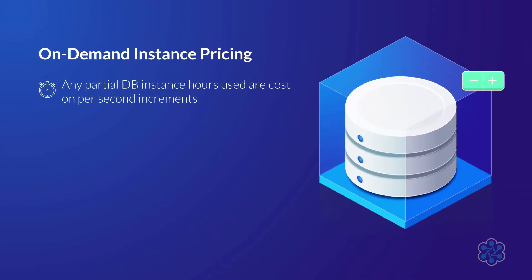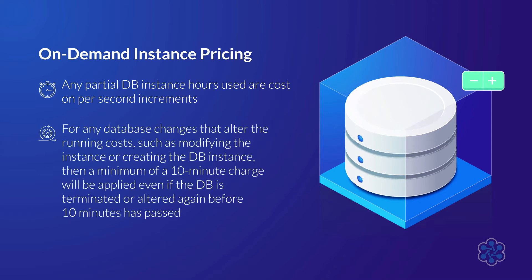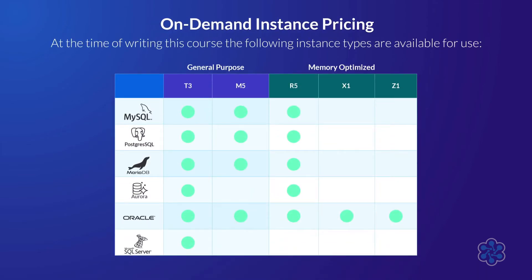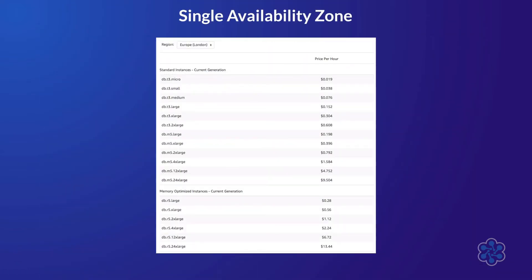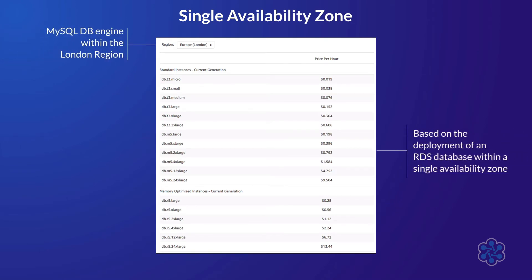Any partial database instance hours used are billed on per second increments. For any database changes that alter the running costs, such as modifying the instance or creating the database instance, a minimum of a 10 minute charge will be applied even if the database is terminated or altered again before 10 minutes has passed. At the time of writing this course, the following instance types are available for use. For a breakdown of the performance of each of these instance types, please refer to the following AWS documentation.